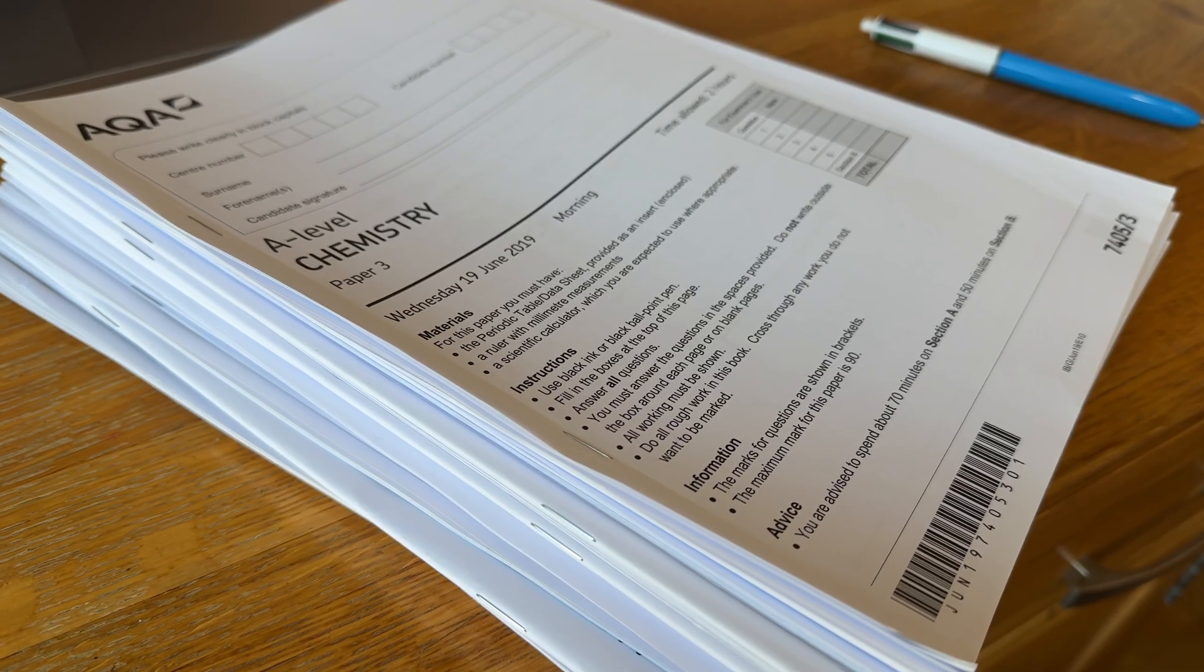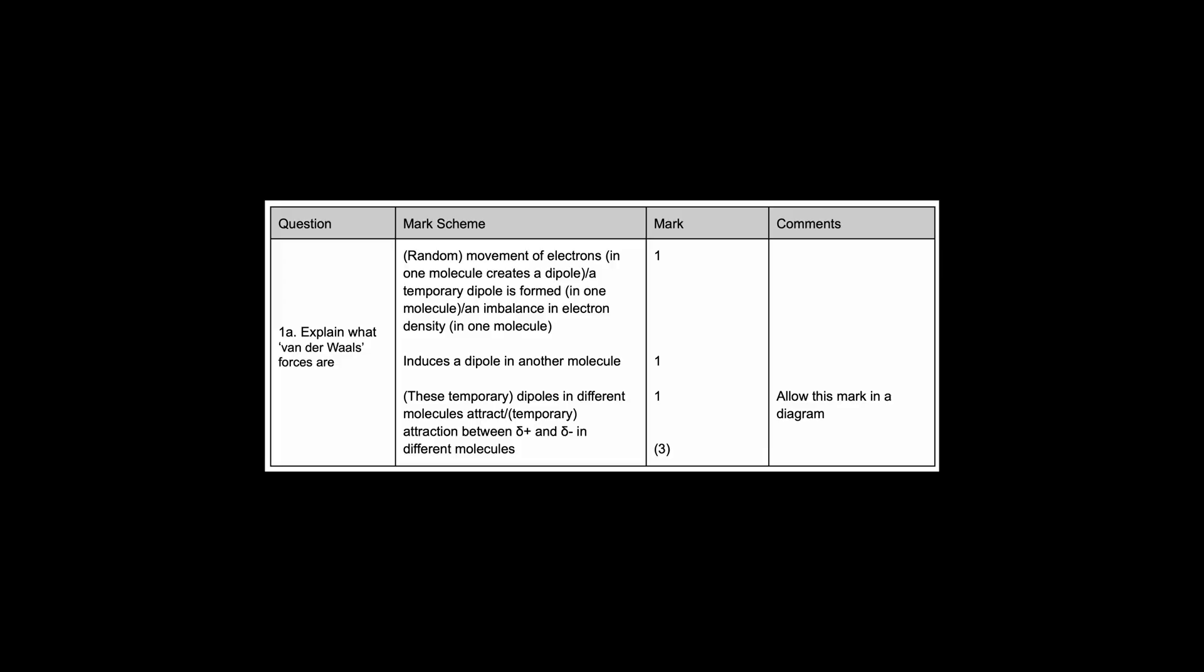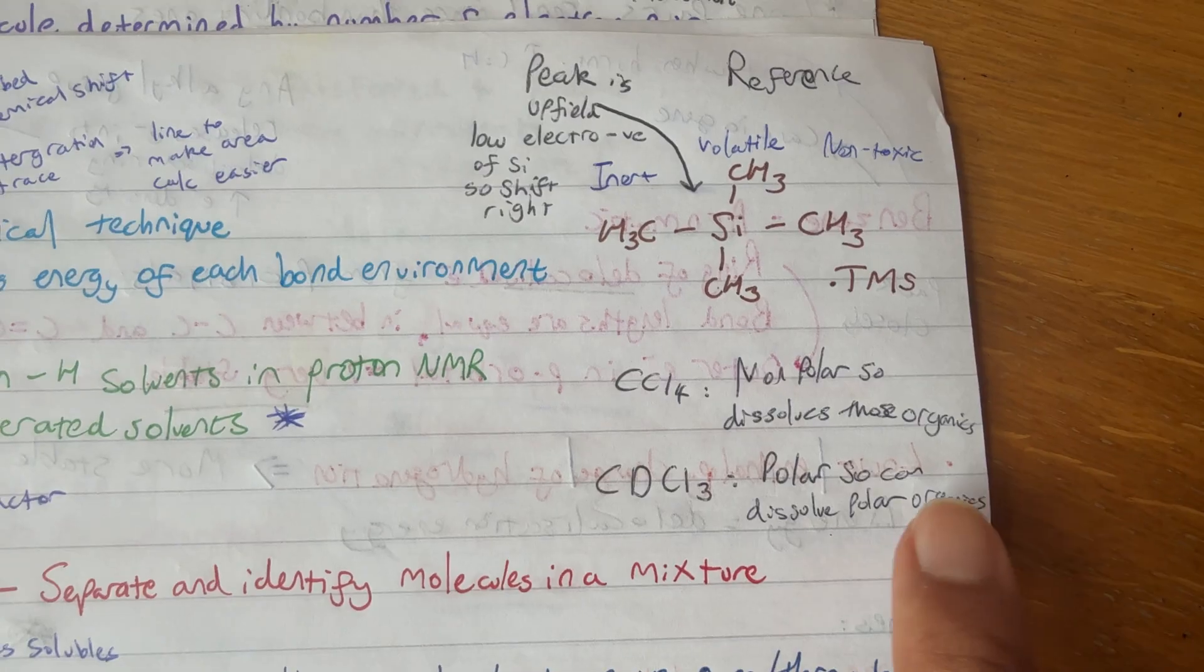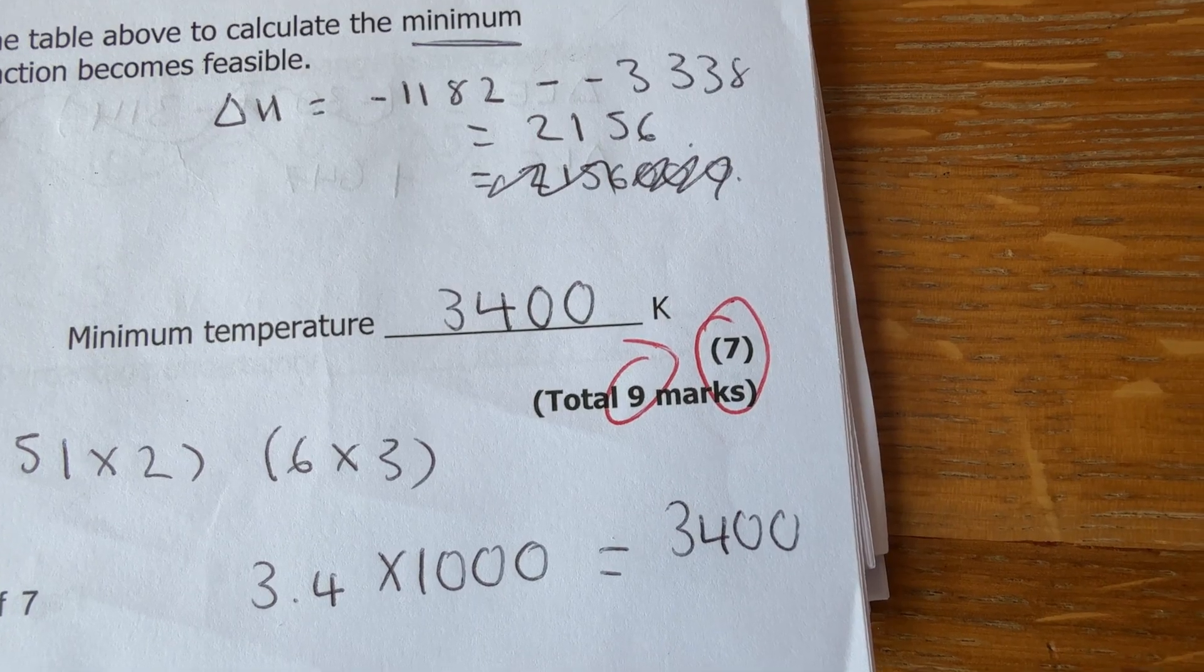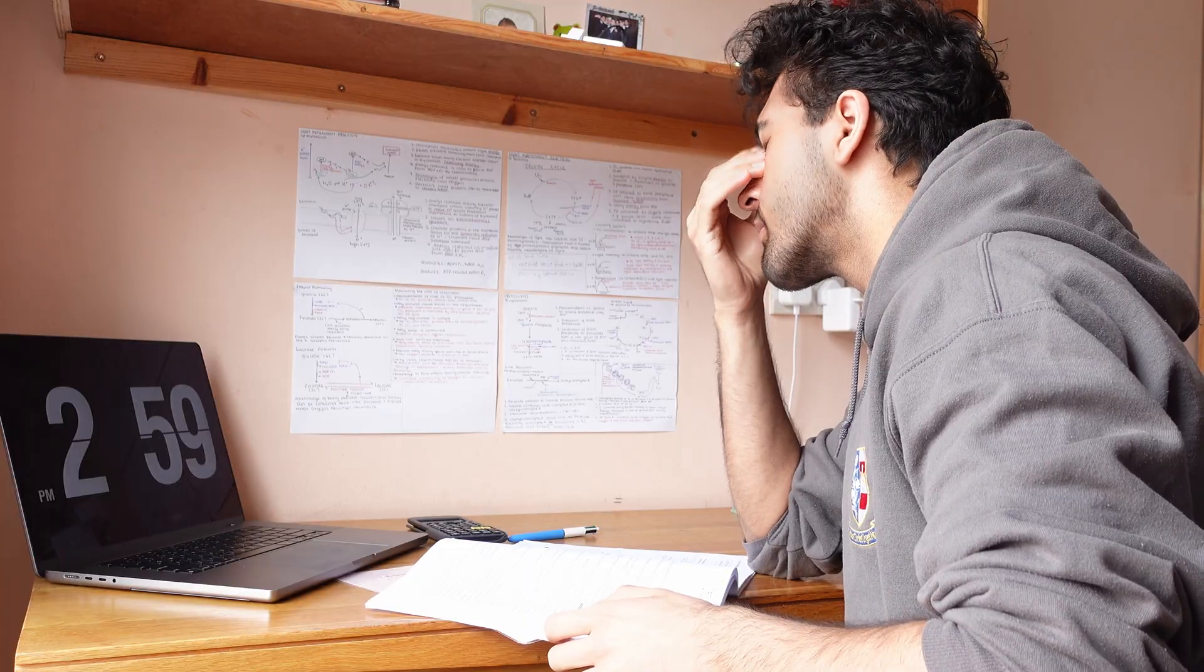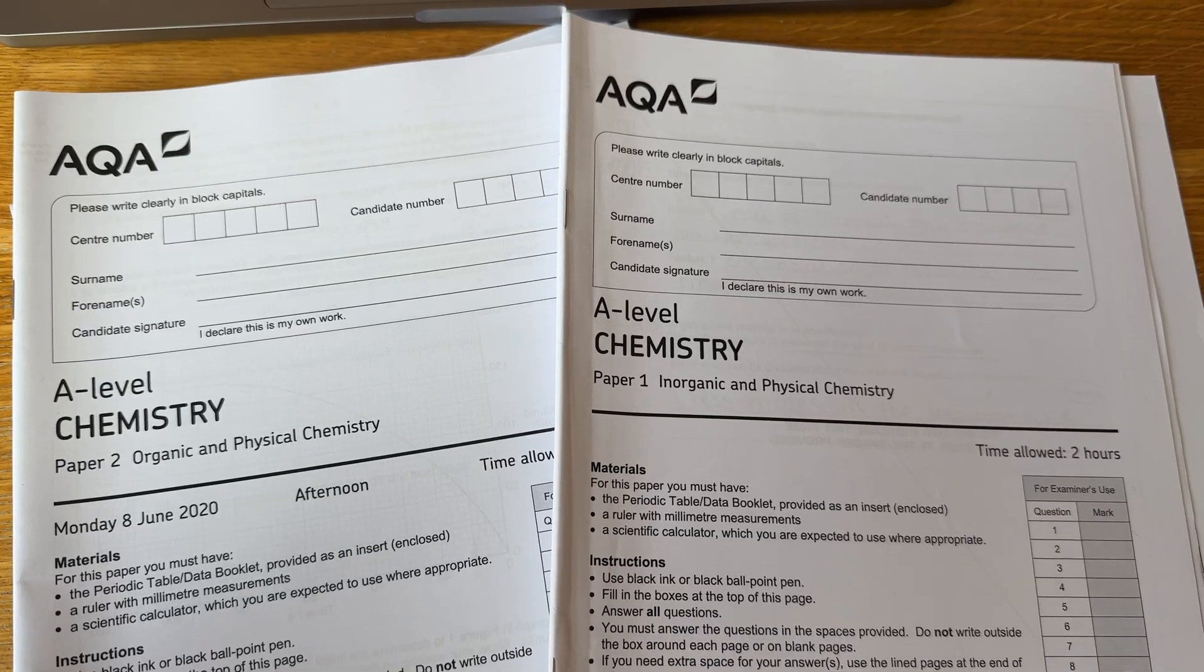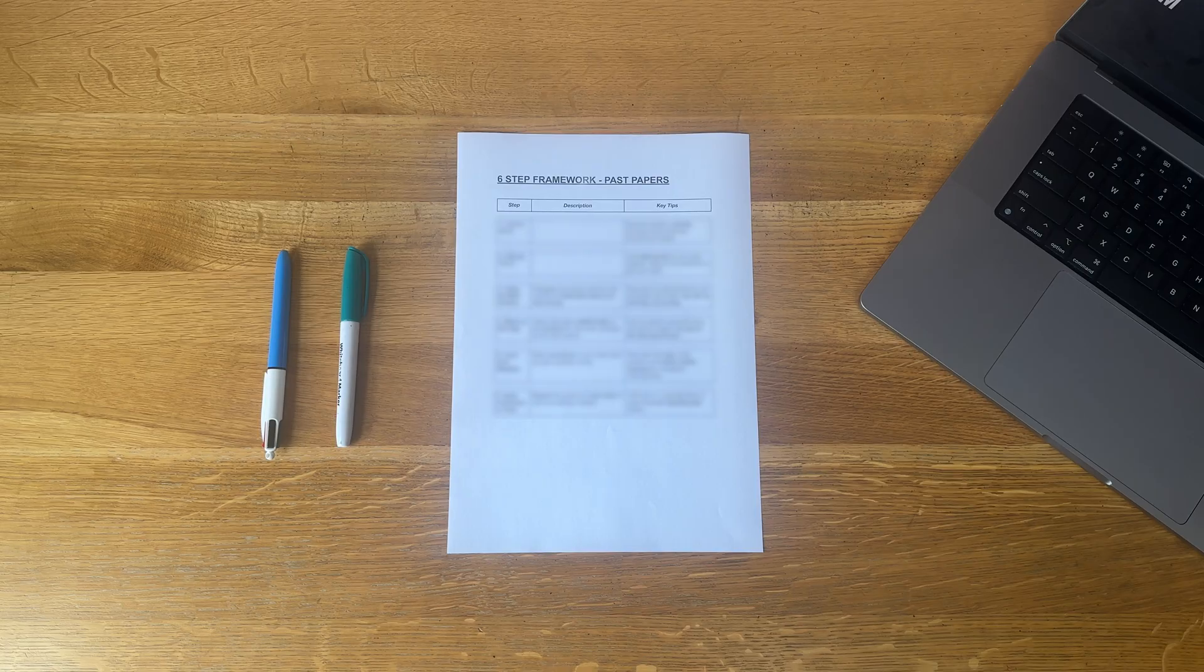Tip 10: The more past papers you go through, the more you learn what the examiner is looking for or what the mark scheme is going to mention. And when you get into that mindset of thinking like the mark scheme or the examiner, it makes it much easier to get the marks. But so many students do not know how to go over past papers properly. But I've got this video to learn the six steps to using past papers the way top students do.